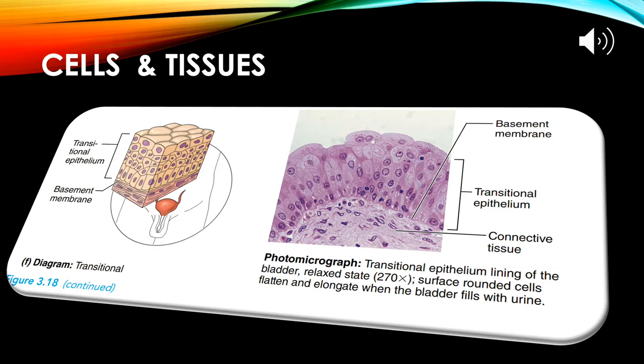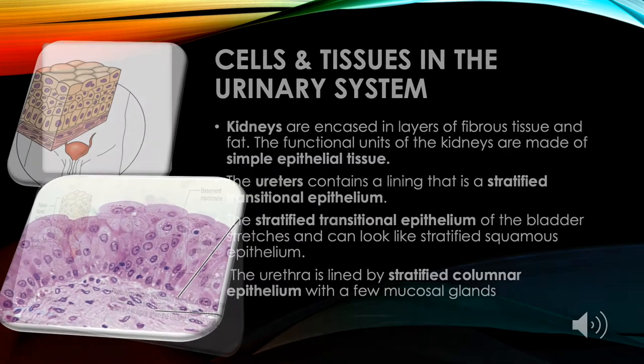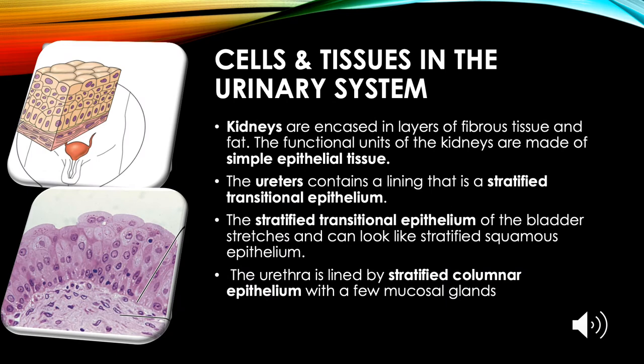Cells and tissues: Kidneys are encased in layers of fibrous tissue and fat. The functional units of the kidneys are made of simple epithelial tissue. The ureters contain a lining of stratified transitional epithelium. The stratified transitional epithelium of the bladder stretches and can look like stratified squamous epithelium. The urethra is lined by stratified columnar epithelium with a few mucosal glands.